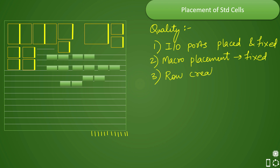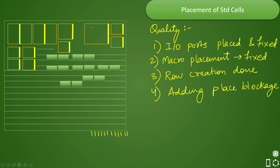Next, we check that row creation is done — we have explained in a previous video how row creation is performed. Then we check for the addition of placement blockages. If any placement blockage is needed somewhere, it will be added. In many companies, the tool places hard blockages over the macro area itself so that no standard cell is placed over the macros — even by mistake. This is additional safeguarding of your macros. Such placement blockages are also applied in channels where you do not want standard cell placement.